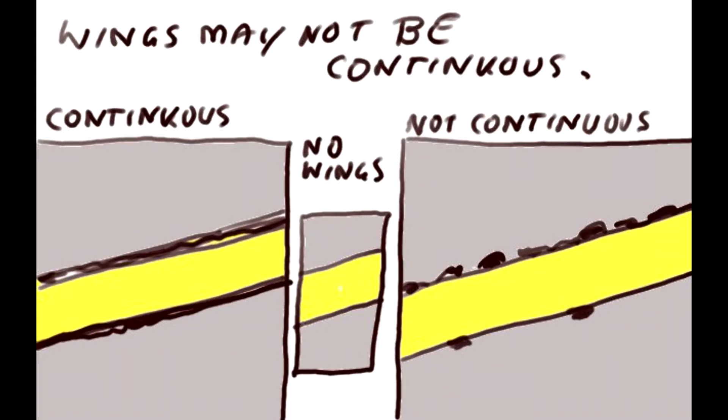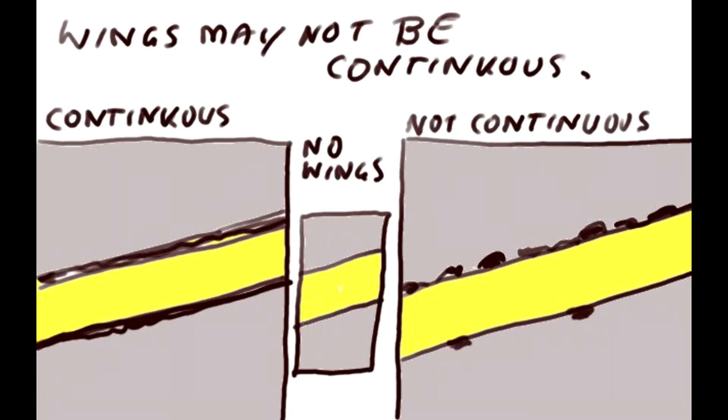Whereas in the middle there would be a stripe with no wings, although there will always be some black line. But often the wings aren't continuous, so you'll see lots of black dotty lines along the edge of the metallization, or the wings may even fall off and lie all over the substrate. Remember that the angle of metallization will help to form wings on the metallization after lift-off.